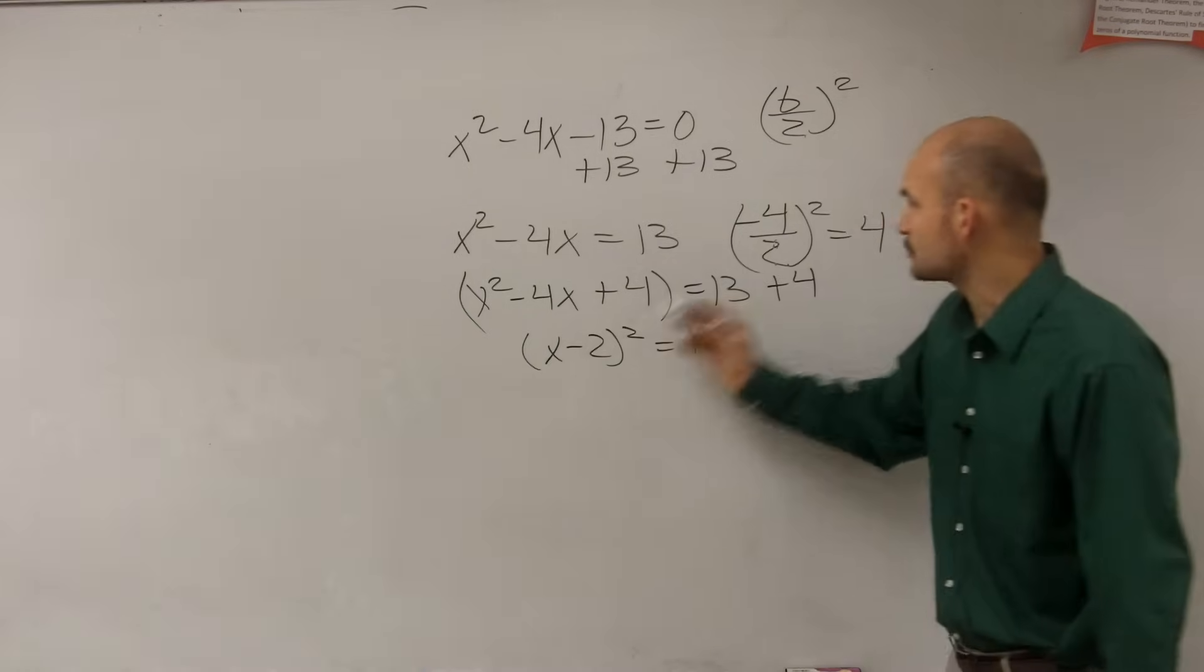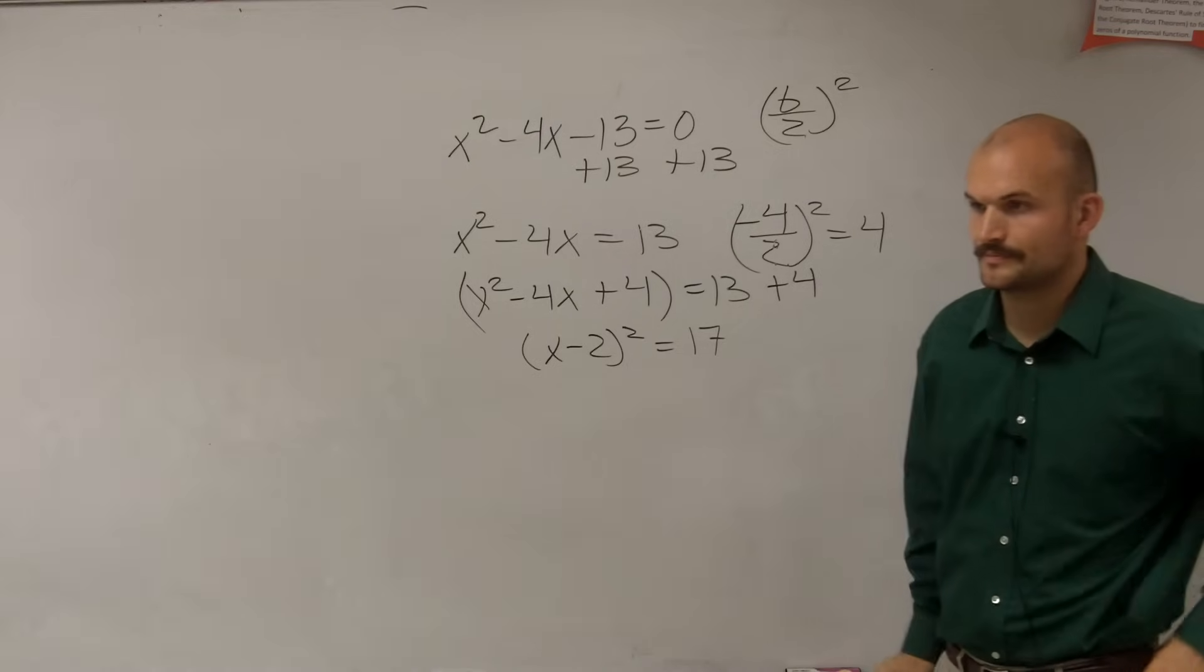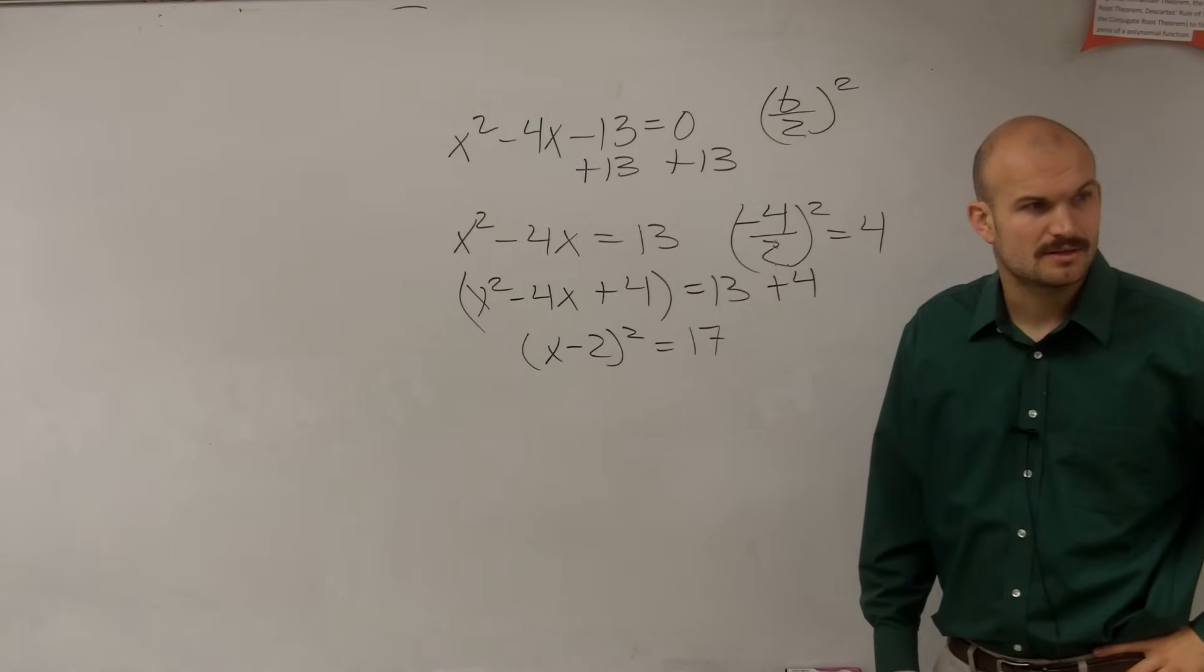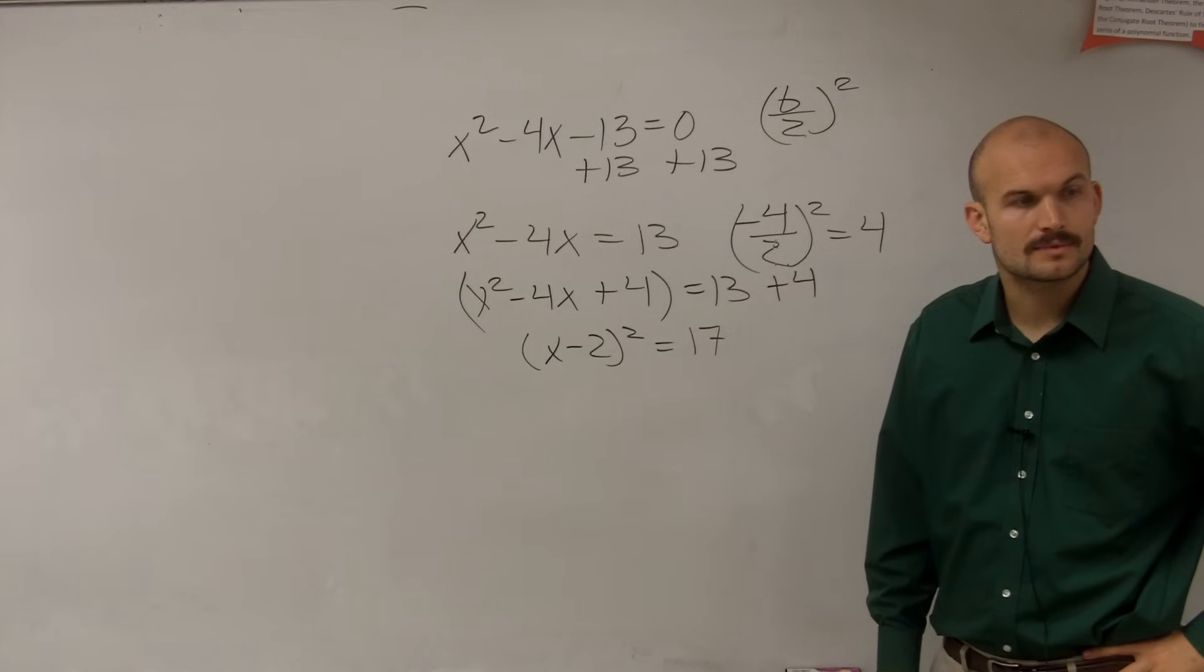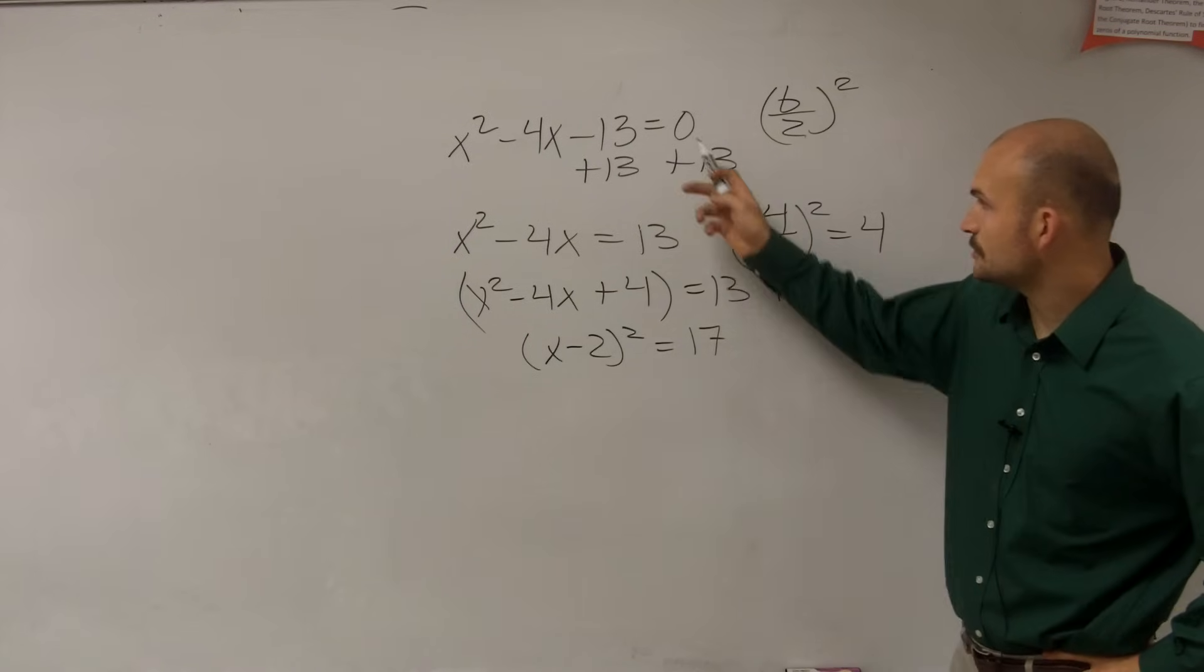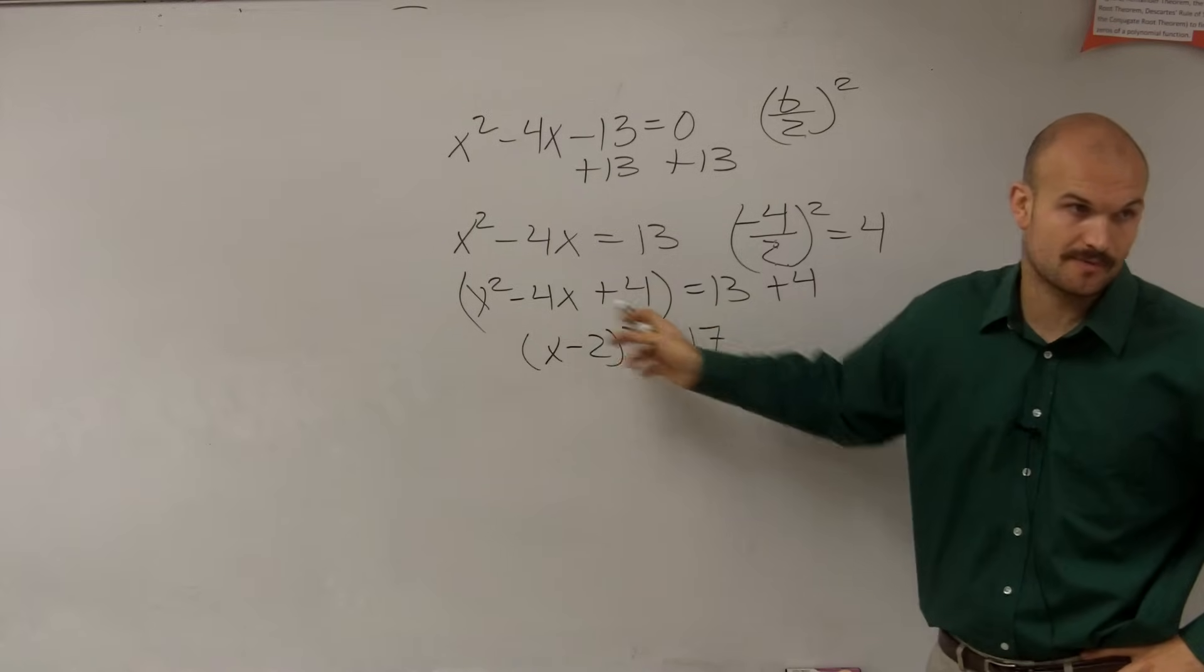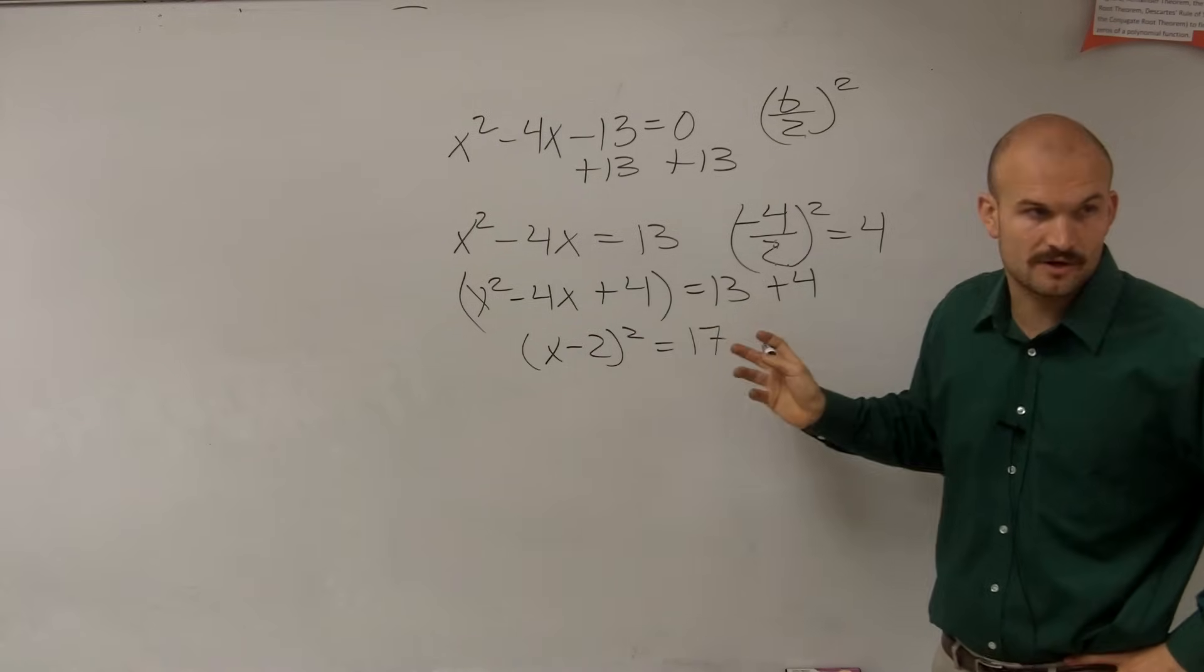Does everybody follow me? Remember, to always find the perfect square, just take your b and divide it by 2. Does everybody follow me so far with this? Remember, with 13, I moved to the other side. And then remember, since I added 4 on the left side, to create a perfect square, I had to make sure I added 4 on the other side.